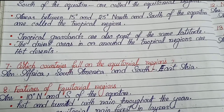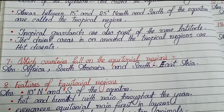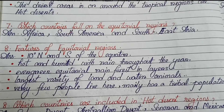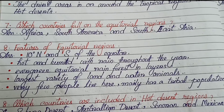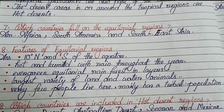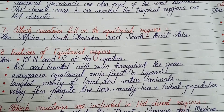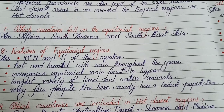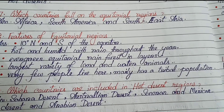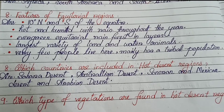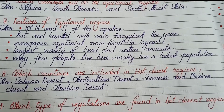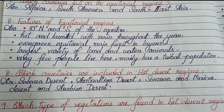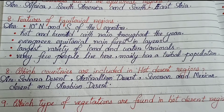Number 7: Which countries fall in the equatorial regions? Africa, South America, and Southeast Asia. Number 8: Features of equatorial regions — 10 degrees north and south of the equator; hot and humid with rain throughout the year; evergreen equatorial rainforest in layers; largest variety of land and water animals; very few people live here, mainly a tribal population.